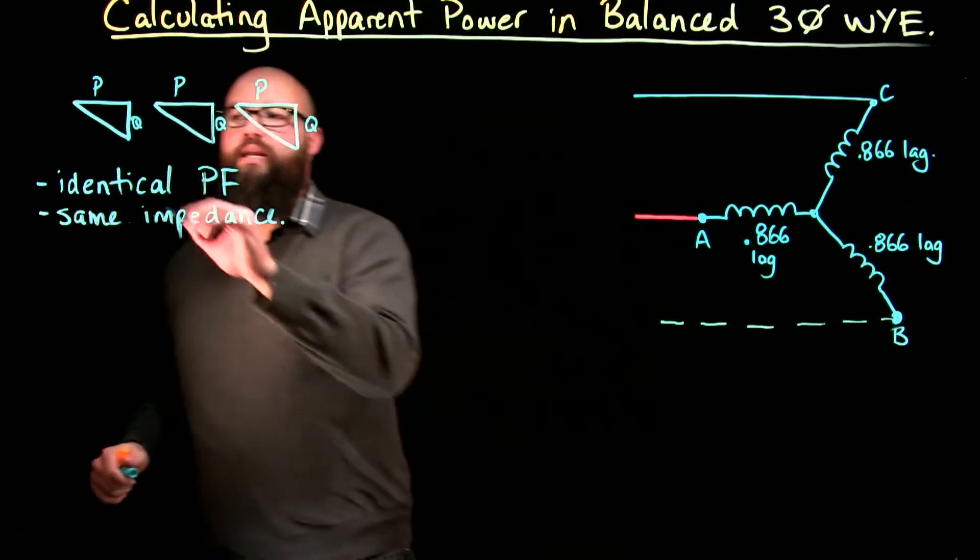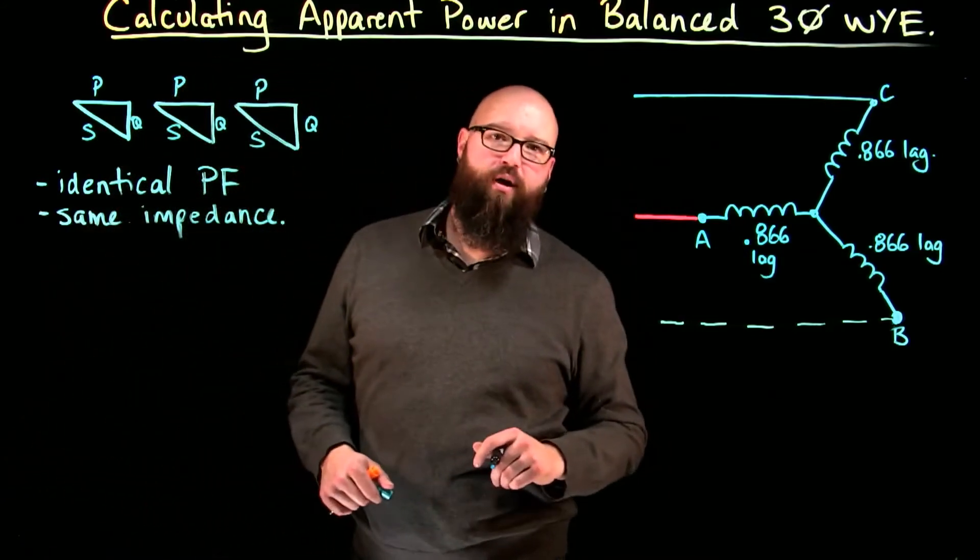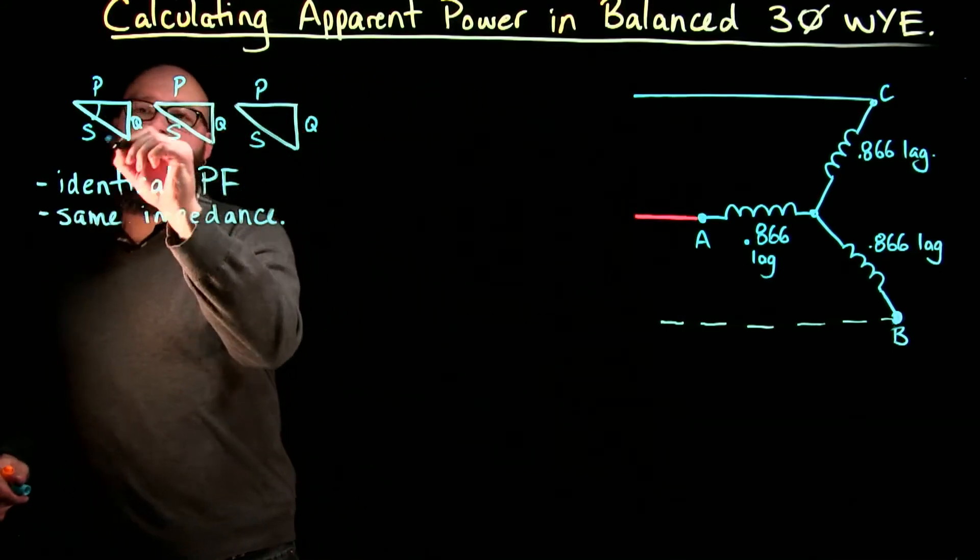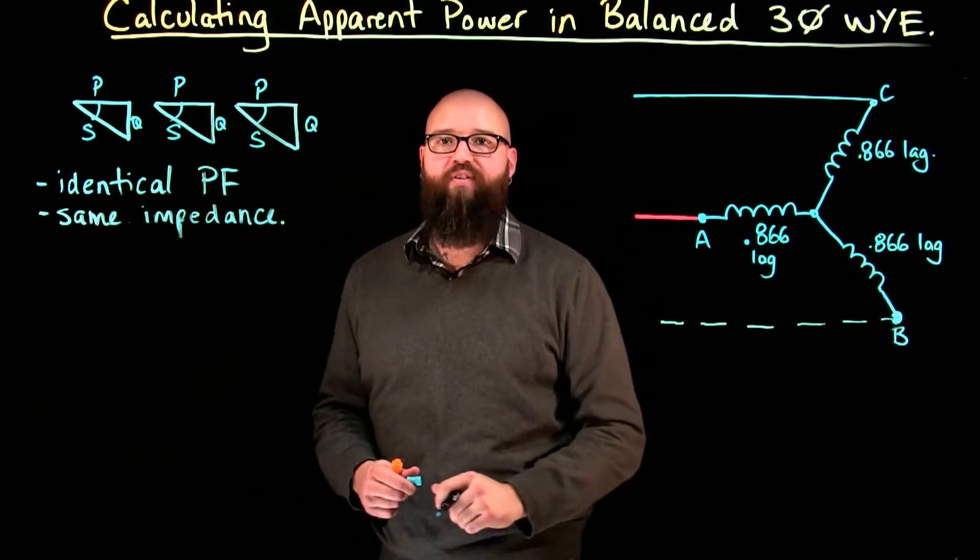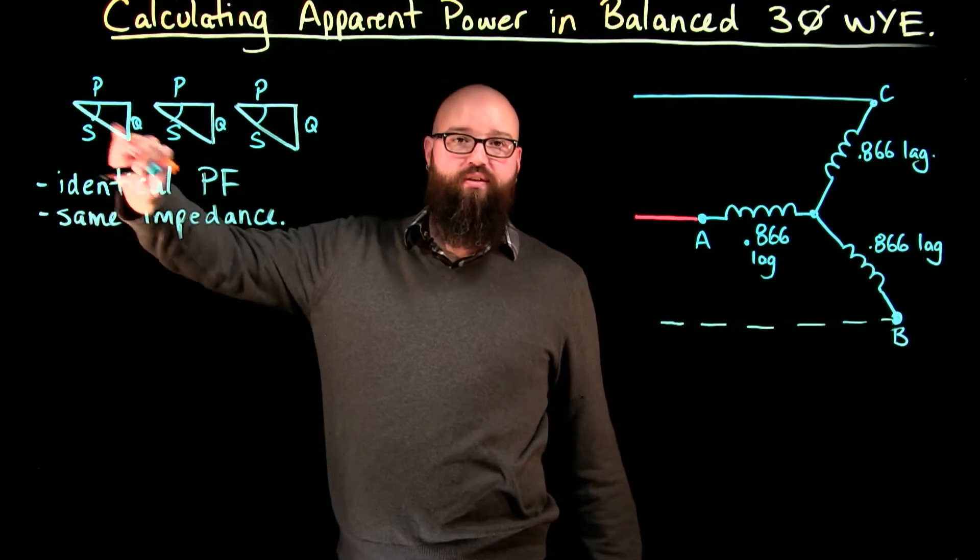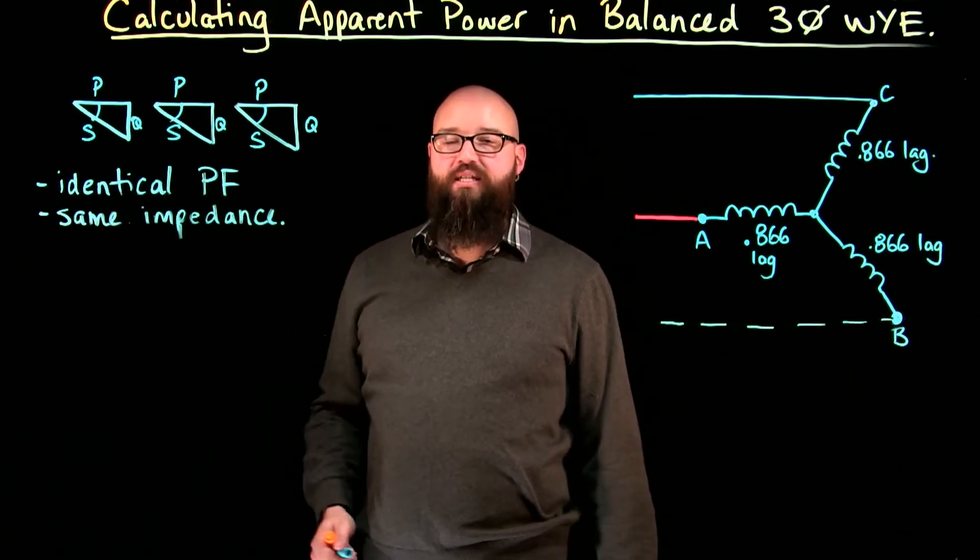Pythagorean's Theorem, what we would end up with is the exact same amount of apparent power per phase, and because each of these has the exact same phase angle and has the same power factor, I would end up with three identical triangles, which when we combine these into a total.